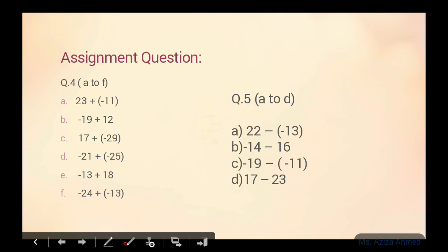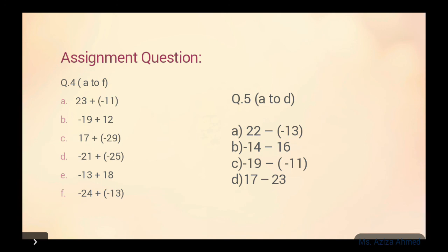So here is an assignment question — question number four aur question number five. Question four mein aapko addition ka sign center mein dekh raha hai in terms ke, aur question five mein subtraction ka sign dekh raha hai. Aapko pata hai jab do negative numbers hon aur subtract karna ho, toh plus kar lete hain. Aur woh rules aapne 60% yaad kar liye hain. Is video ke baad jab aap assignment kar rahe honge, toh 40% yaad ho jaayega, aur phir aap 100% is exercise mein bilkul cheete ban jaayenge. So do this as an assignment question, taaki jitni bhi information aapne is video se hasil ki, usko bilkul mahfooz kar sakein. Good luck for your assignment!